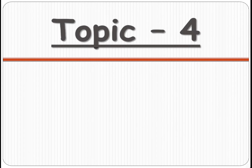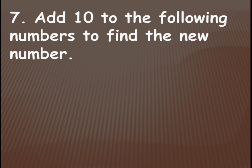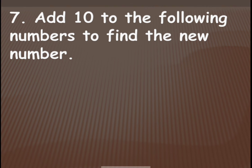So today we will learn the fourth topic, which is adding 10s. Let's see: add 10 to the following numbers to find the new number. For each given number you have to add 1 ten. 10 means 1 ten — in the column of tens and ones we write 1 ten, which is nothing but 10. So we need to add that 10 and write the new number.